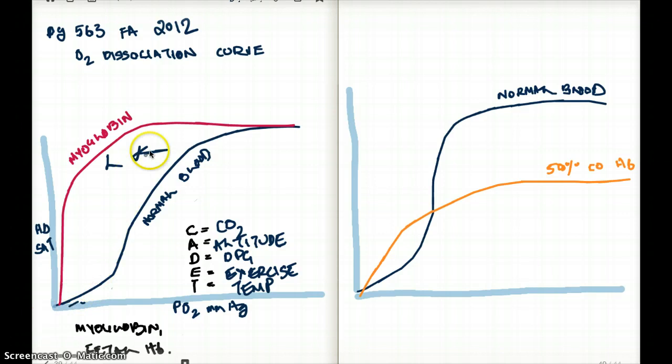Now this blue curve is our normal blood curve for the oxygen dissociation curve. You can see that this curve is sigmoidal in shape, and the reason this curve is sigmoidal in shape is because of hemoglobin-oxygen cooperativity.